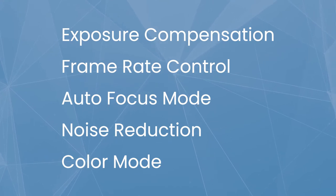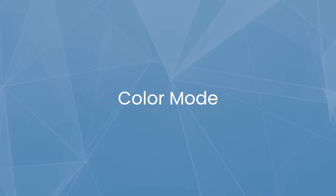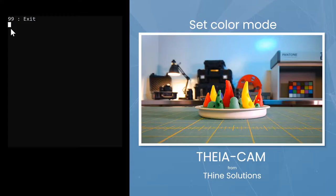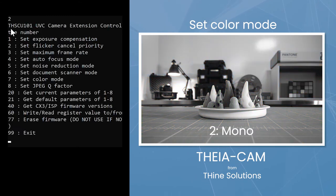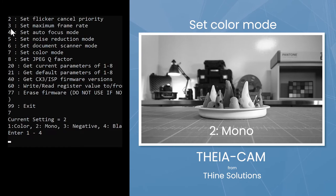Let's demonstrate a few of these now. Let's begin with color mode. Enter the number 7. You will have 4 choices. Let's choose number 2. Now enter 7, then 1 to return to color.